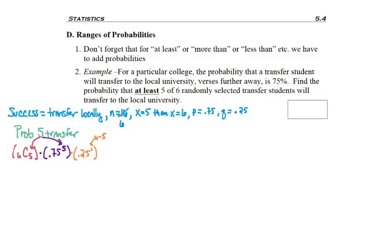Then I have OR—the probability that all six students transfer. So now stuff starts to get a little bit different. The combination is six choose six.